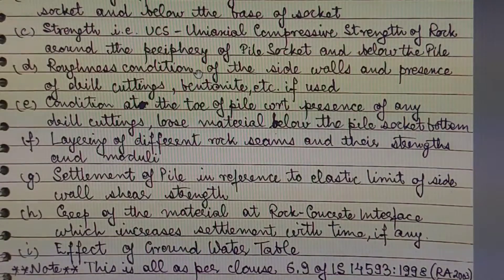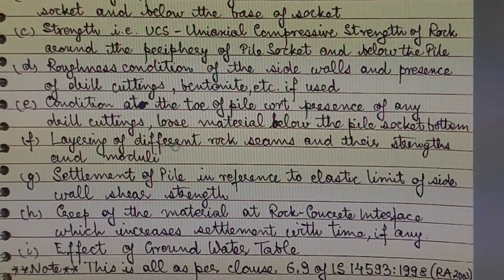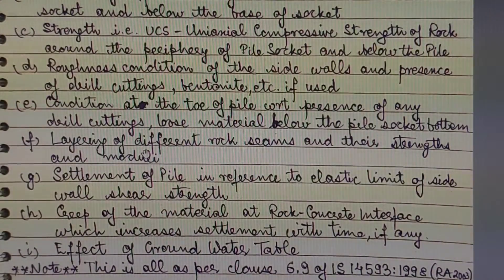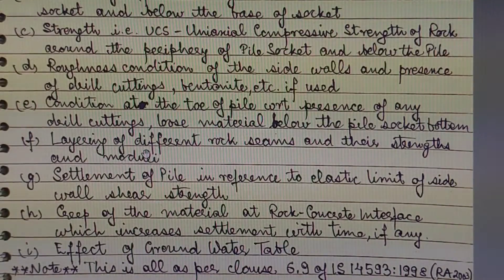Roughness through shaft friction — the friction component of our pile can be affected. The end bearing component of the pile can also be affected. Factor F is the layering of different rock seams and their strength and moduli, because when we embed a pile the kind of rock may change during its embedment depth, and on that basis the load carrying capacity of our pile can be affected.